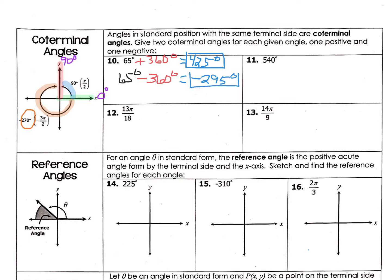So that is our negative coterminal angle. We have one positive and one negative. If subtracting that 360 still gave us a positive value, we would have to subtract 360 again and again until you get a negative value. Same thing would occur if we had started with a negative degree measure — you would have to add 360 until you get a positive degree measure.